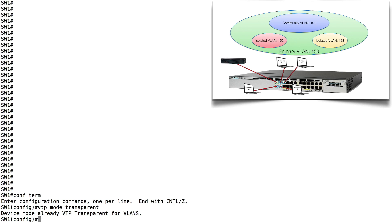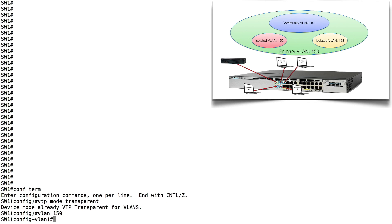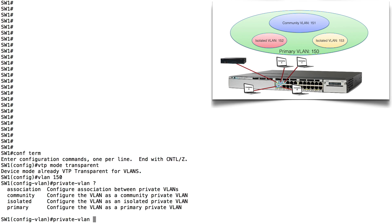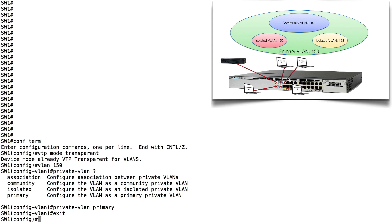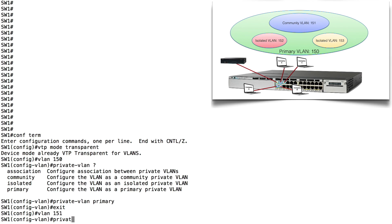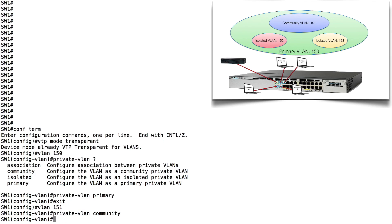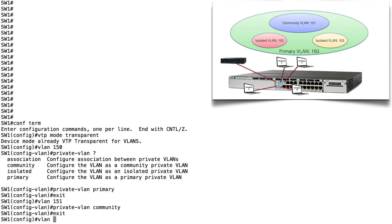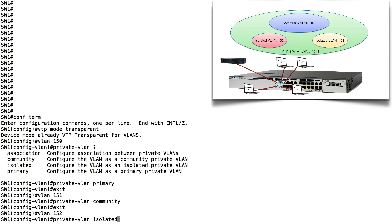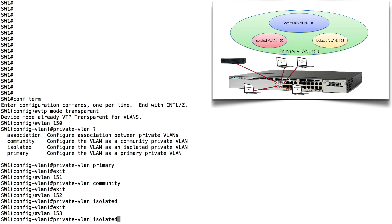Now let's create the Primary VLAN. All five ports are going to belong to VLAN 150. Under VLAN 150 config mode, we say private-vlan primary. Next, let's create VLAN 151 — a subdomain of VLAN 150 — and we say private-vlan community. Then we create VLAN 152 and say private-vlan isolated. Finally, we create VLAN 153 and also mark it private-vlan isolated. We've now created our Private VLANs.